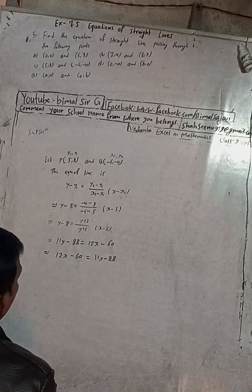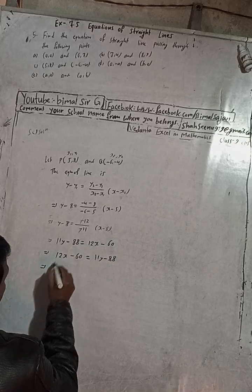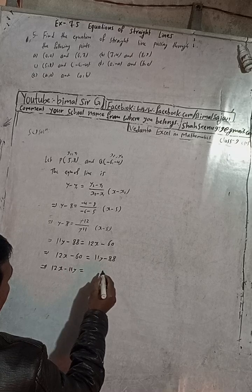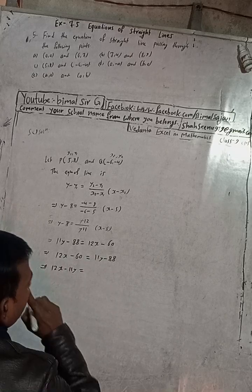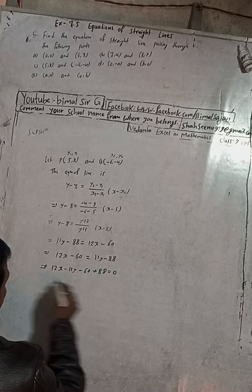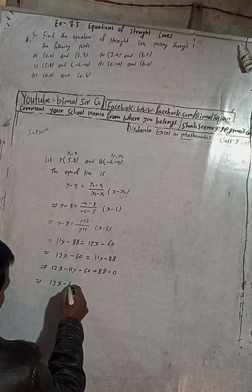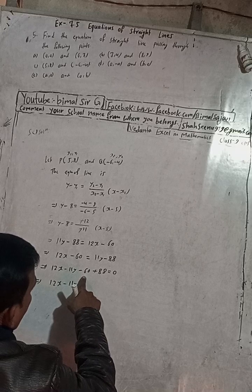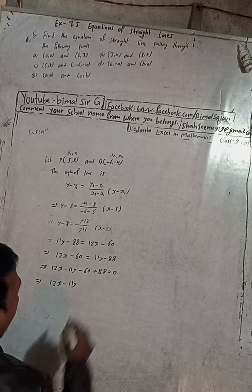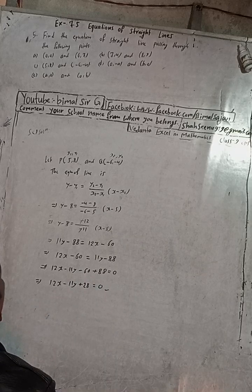After rearranging both sides: 12x minus 11y, and on the other side minus 60 plus 88 equals 28. So the required equation for 5c is 12x minus 11y plus 28 equals 0. Now question 5d.